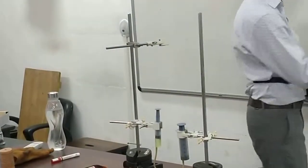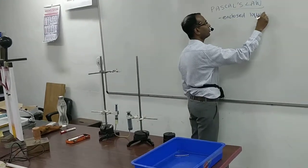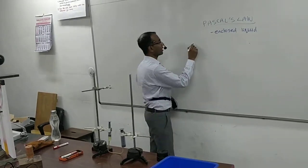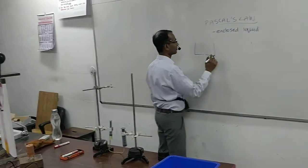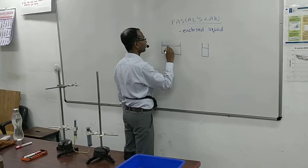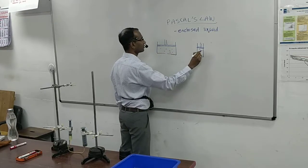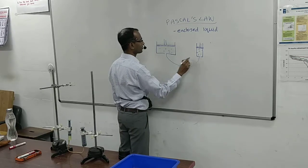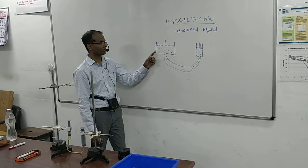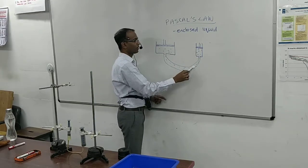Both liquids are closed from all sides by the walls of the container and the piston of the syringe on top. So this represents enclosed liquid — that means there is no surface of the liquid which is free. The liquid is bound by some surface in contact from all sides. I will draw the diagram also. So this is the liquid, this is the piston, and the liquid is filling it. They are connected by a tube. The liquid is surrounded by a wall on all sides — that's what I meant by enclosed liquid.